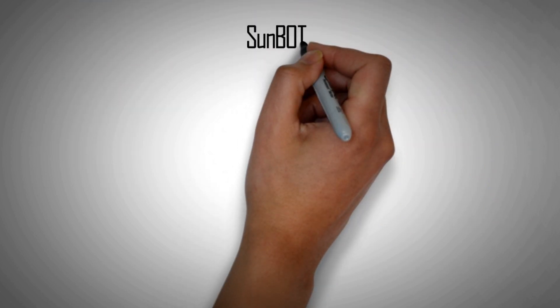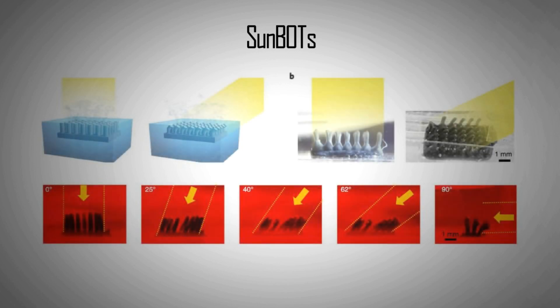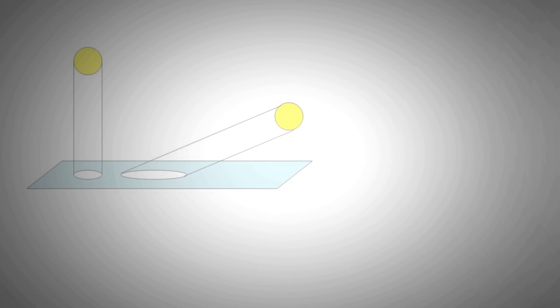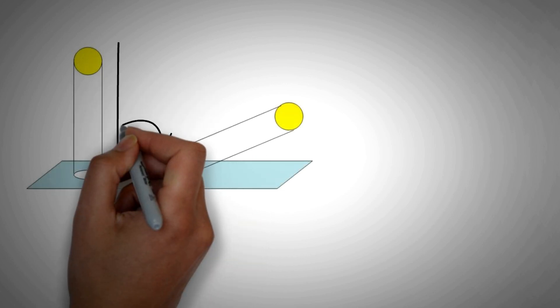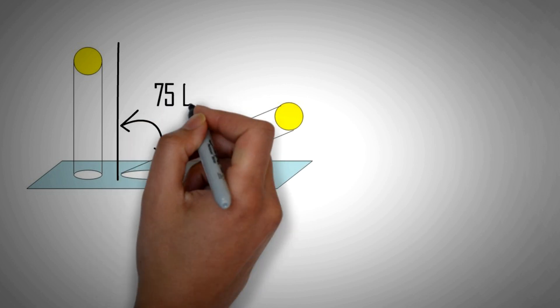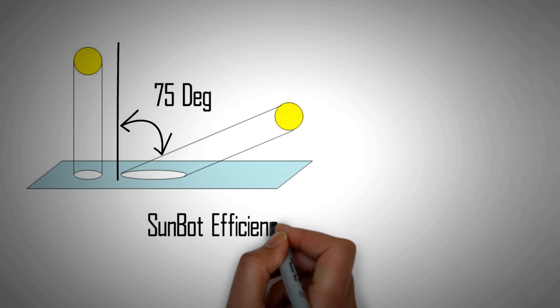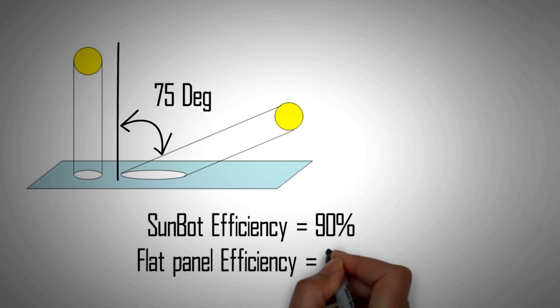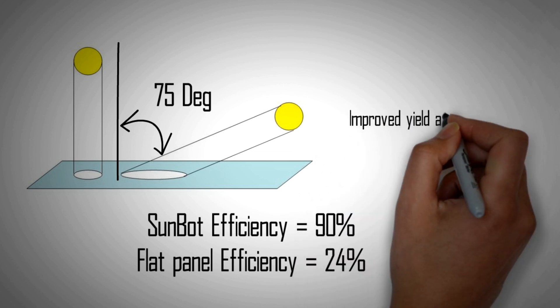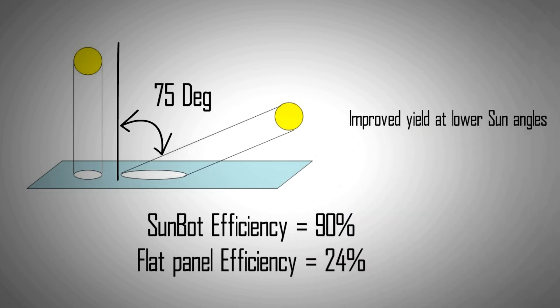The newly developed SunBOTs have the ability to track the sun throughout the day. Such is their effectiveness that they can harvest 90% of the sunlight when its angle is 75 degrees away from the perpendicular to the surface. If we compare this to stationary solar panels, they're able to convert only 24% of the light at that angle. Therefore by using SunBOTs we can certainly increase the yield of our solar installations.